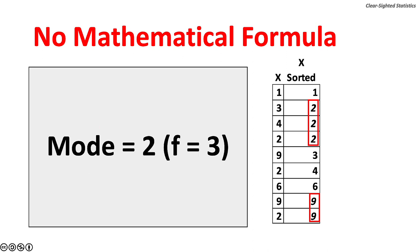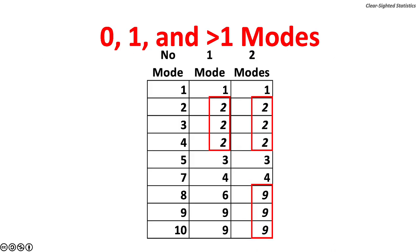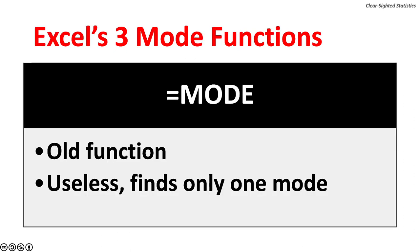With this table of data, the mode is 2 because 2 appears 3 times. 9 is not the mode because it appears only twice. This chart shows that data can have no mode, one mode, or more than one mode.